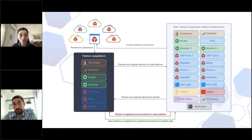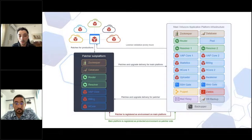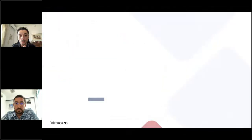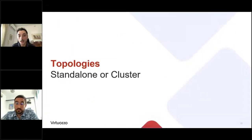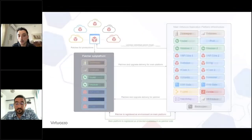Regarding how we patch production systems — there is no downtime for user workloads. We patch the infrastructure nodes by placing a maintenance page for the administrator and user panels. This task usually takes up to three hours.